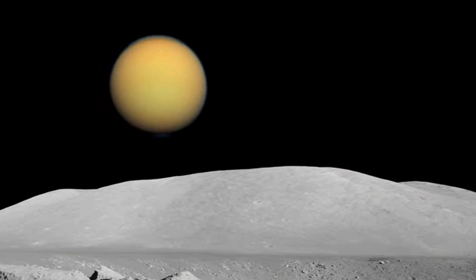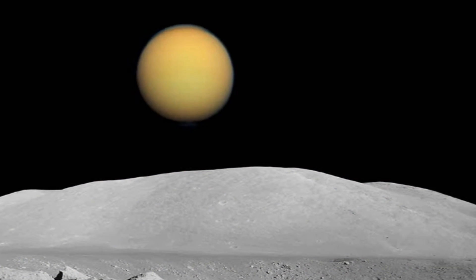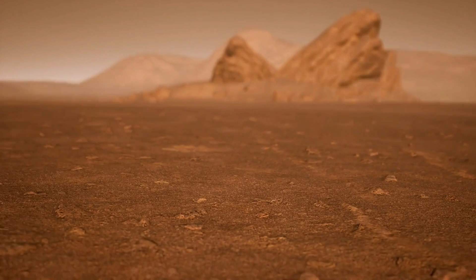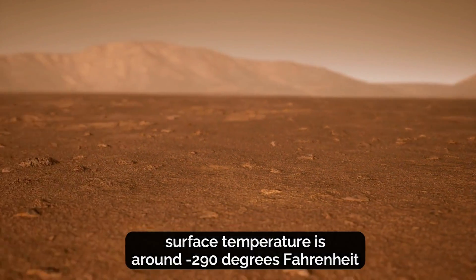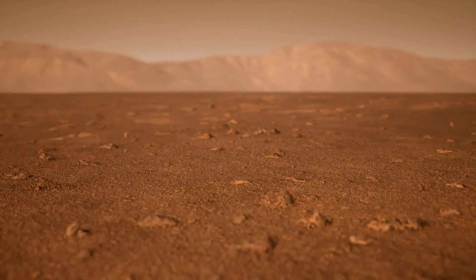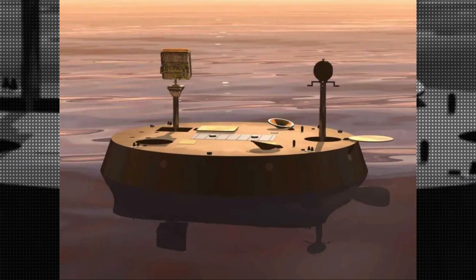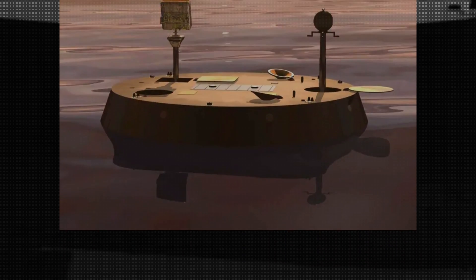There are two main theories about whether Titan can support life. According to the first theory, the conditions on Titan are too harsh for any known life form to exist. The average surface temperature is around negative 290 degrees Fahrenheit and the atmosphere is mostly made of nitrogen and methane. Furthermore, the lack of liquid water on the surface, which is required for life as we know it, casts doubt on the possibility of life on Titan.